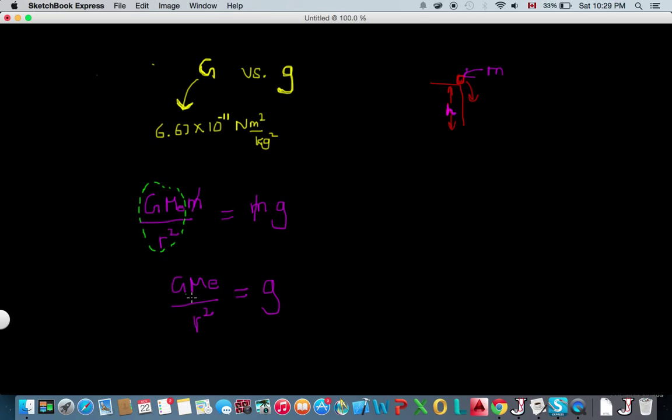So the acceleration due to gravity, as it shows here, changes depending on the mass of the planet or the gravitating body, and it depends inversely on the distance squared from that body. What we're trying to say here is that the acceleration due to gravity on Earth is different from the acceleration due to gravity on the moon, for example.